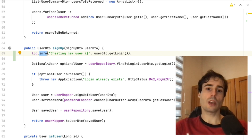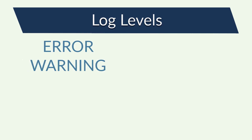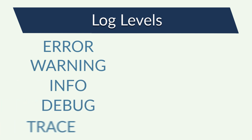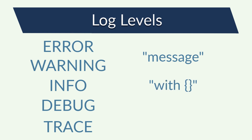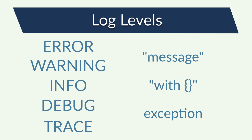But what are the levels and how to use them? There are five levels of logs: Error, Warning, Info, Debug, and Trace. Each of those levels accepts a single message to be printed, or with variables to be replaced inside the message. The replacement will be done only if needed. With each of those levels, I can also print an exception stack trace. If I pass an exception object as the last parameter, the logger will print first my message and then the exception stack trace.